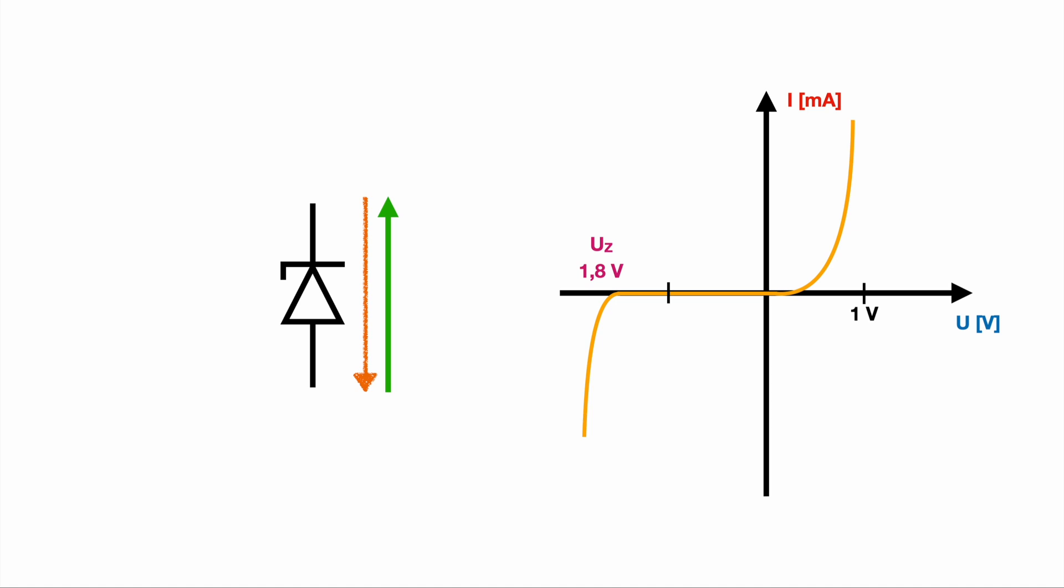If the Zener voltage is 1.8 volts or 5 volts or 20 volts, this is totally up to the type of diode you buy. So you can buy Zener diodes with all different kind of Zener voltages. You can simply Google Zener diode 1.8 volt or something, and you will get some suggestions of manufacturers and types of Zener diodes with a specific Zener voltage.